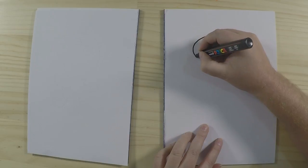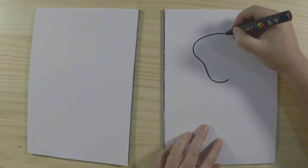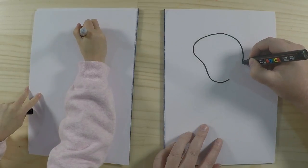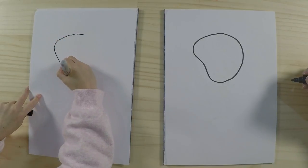And go down and around like that, and then we are just going to close off the other side in a nice big curve. There we go.